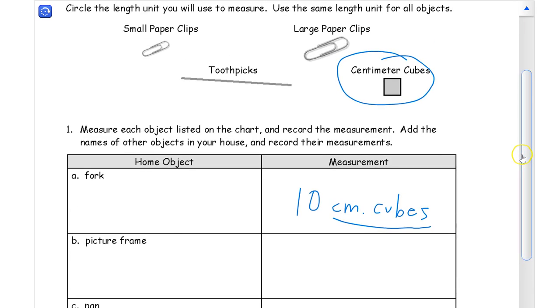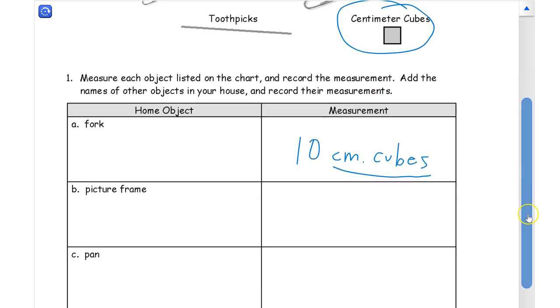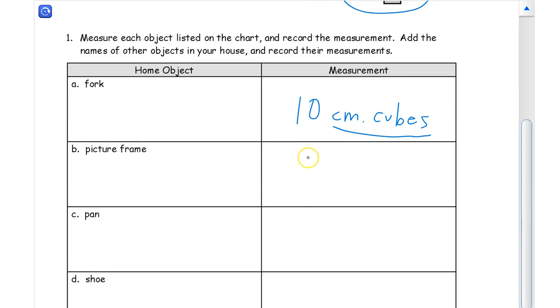And it says here to use the same length unit for all the objects. So that means if you choose centimeter cubes, you're going to use centimeter cubes to measure everything. And your picture frame is going to be, I don't know how many, but if you chose centimeter cubes, you're going to have to write that unit in there.